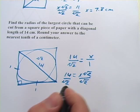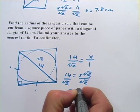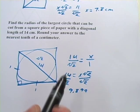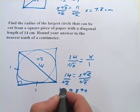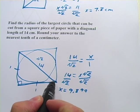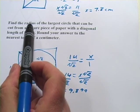So we've got 14 divided by the square root of 2. And that is 9.899 and change. But we have to wait a second because that's not really our answer.